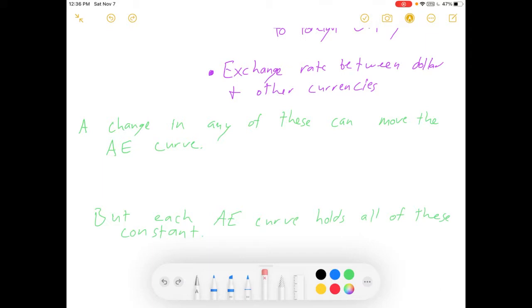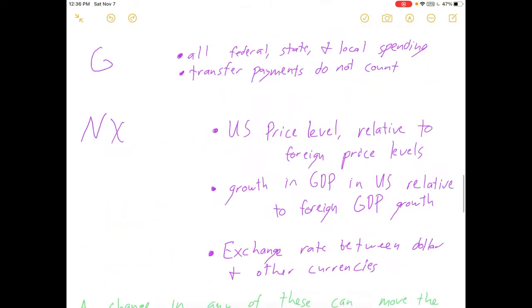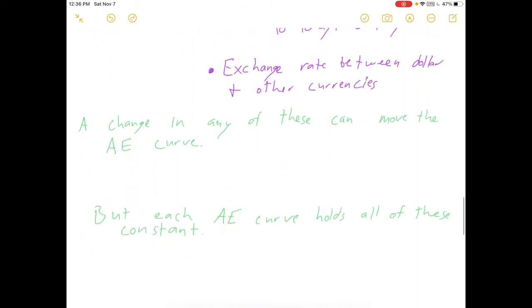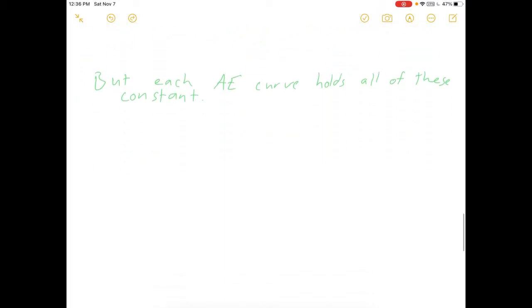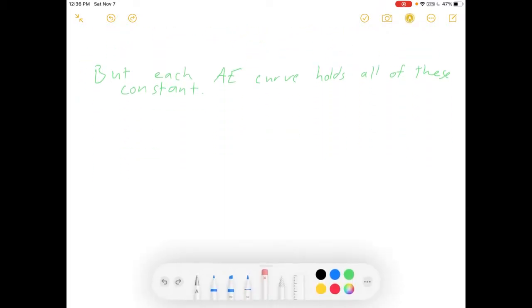That said, within each aggregate expenditures curve, all of those variables, all of them, are all held constant within each AE line. If any of those move, your whole line is going to have to move.